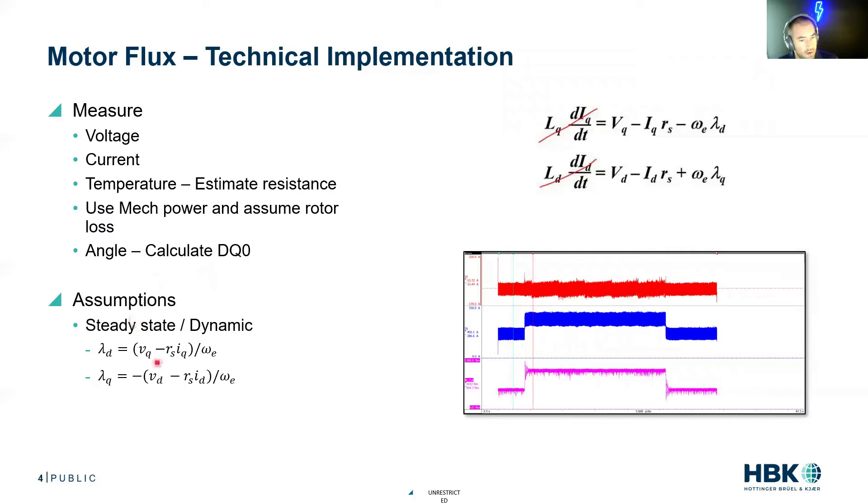If we make the assumption that we're operating in a steady state, we can rearrange our equations, and we get lambda, or flux in the D-axis is VQ minus the Q-axis losses over electrical speed, and we can get flux Q as negative VD minus the D-axis losses over speed, and this is becoming pretty simple.